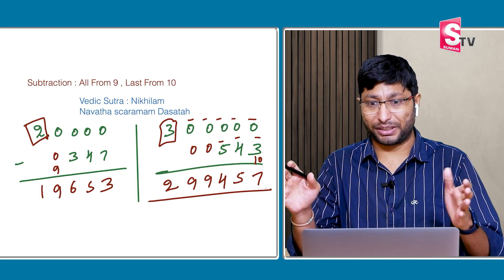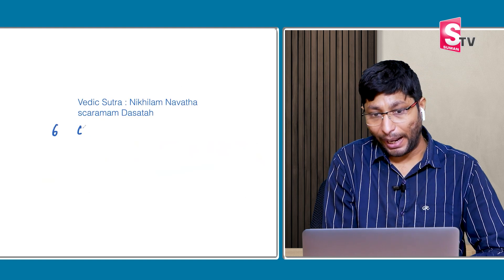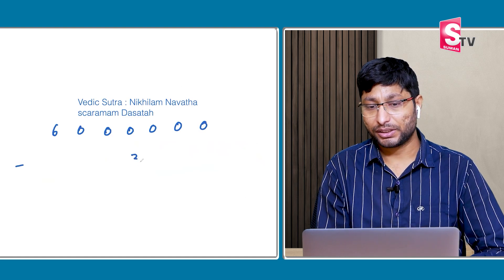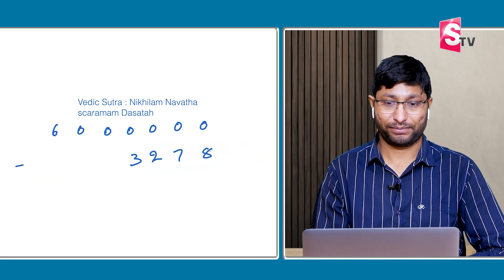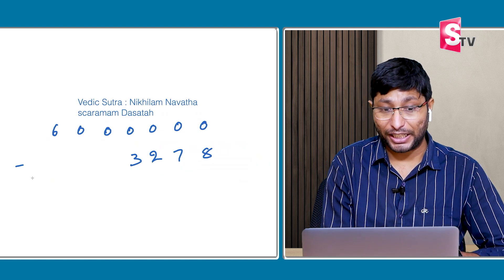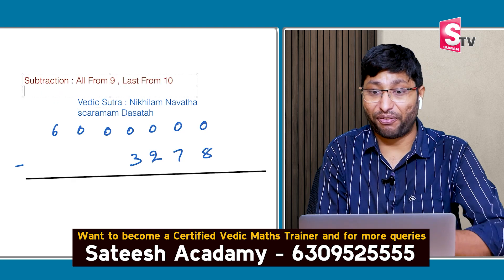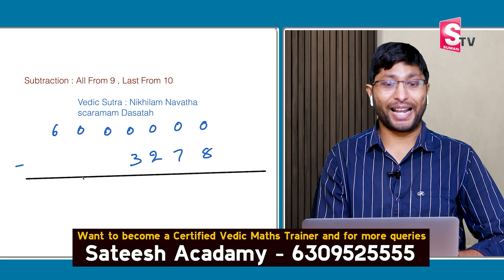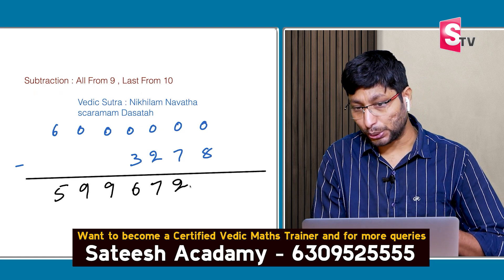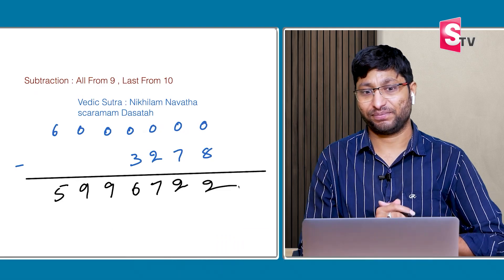This can work with any number — this is the basics. Last problem: 60,00,000 minus 3,278. Which seems impossible to solve in the mind, but using all from 9, last from 10 I will answer in less than five seconds. 6 minus 1 is 5, then 9, 9, 6, 7, 2, 2. Answer: 59,96,722. If you want to cross-check, pause the video, open the calculator and verify. Thank you so much for watching.